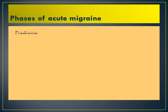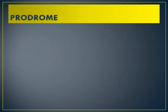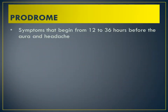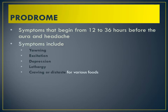The phases of an acute migraine attack are: prodromal phase, aura, and headache. The prodromal phase, as the name indicates, involves symptoms that begin 12 to 36 hours before the aura and headache. These may include increased anxiety, depression, lethargy, and cravings or distaste for various foods. Patients diagnosed with migraine are often aware when they are in the prodromal phase.